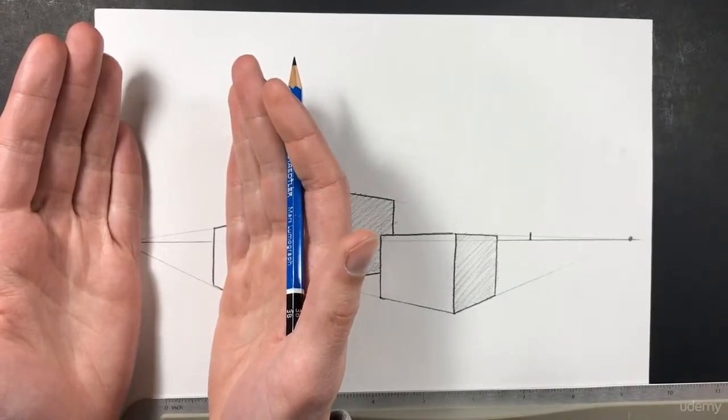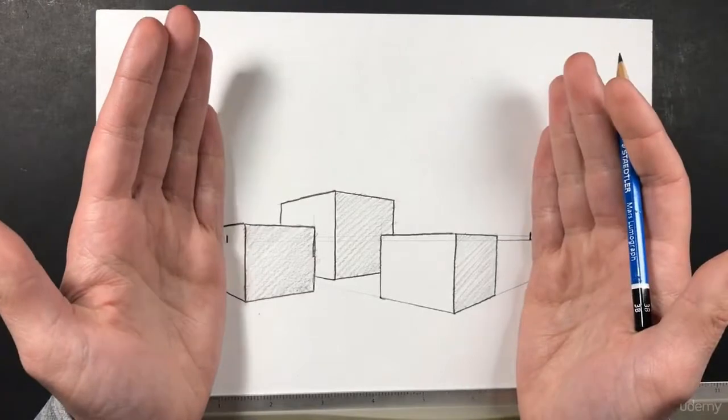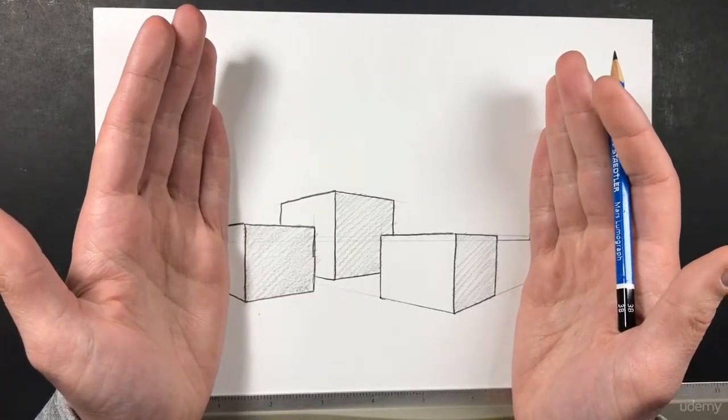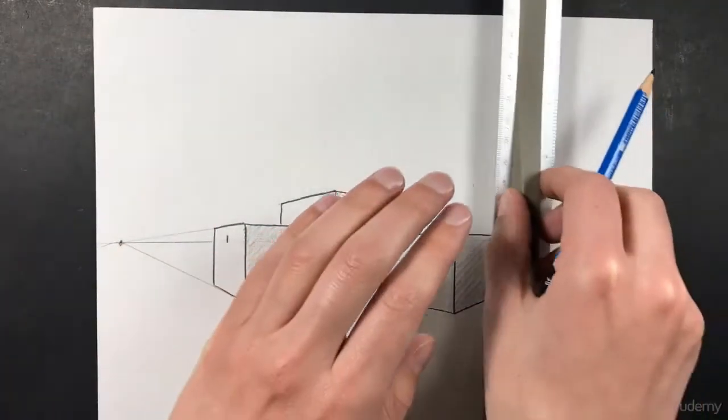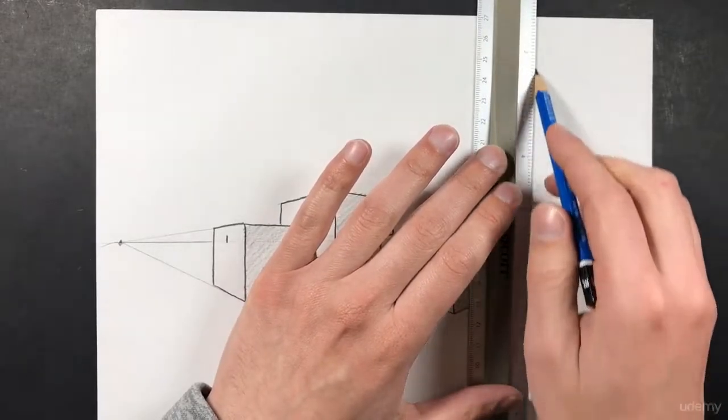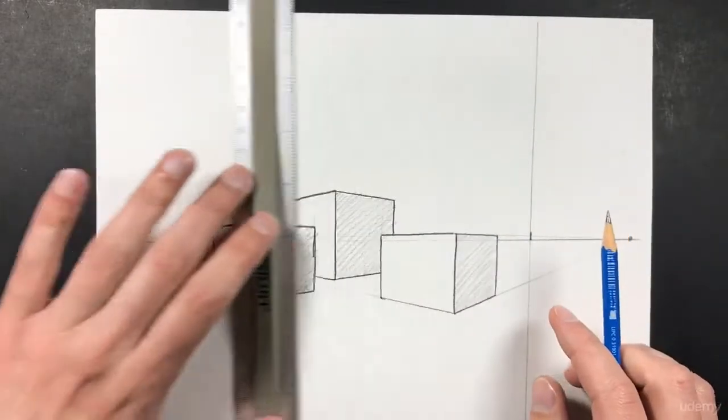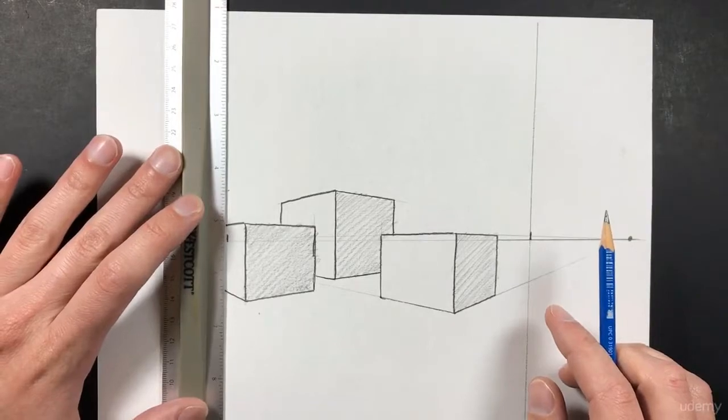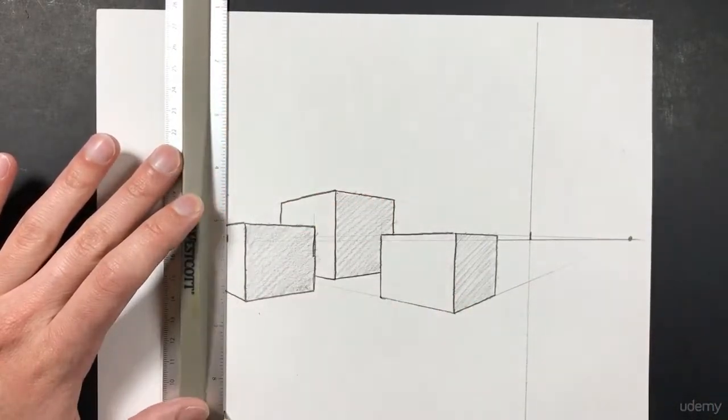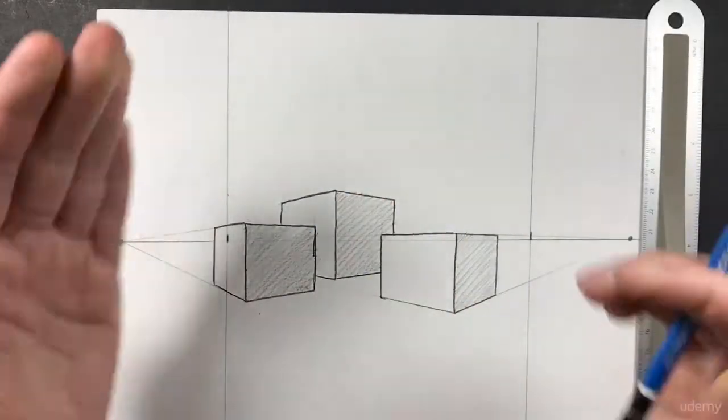You would never see something that distorted in perspective, but you would see that type of perspective right there. So we can go ahead and now draw vertical lines coming up from each one of those points, like so. And now that's our composition right there. That is our workspace to work in.